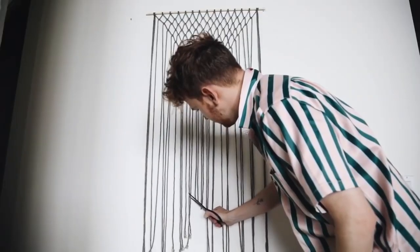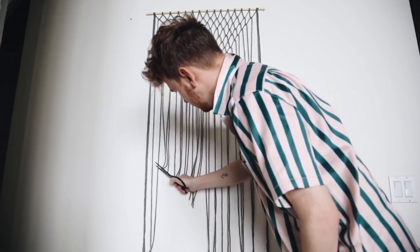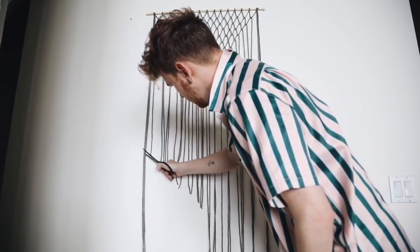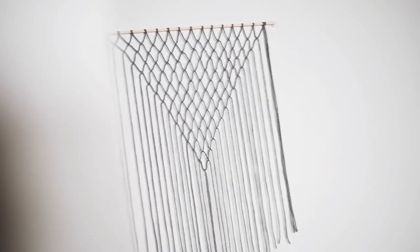Once I was done, I went ahead and hung it on the wall. I used a pair of scissors to just trim away the excess yarn into an arrow shape. I feel like this really gives this piece a little bit more interest.